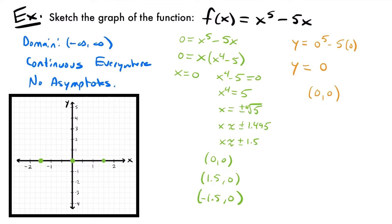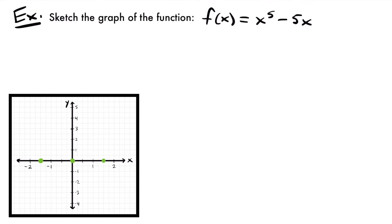We're going to start by taking the first derivative of our function and finding our relative extrema, and then we'll move into the second derivative. Taking the first derivative: f prime of x equals 5 times x to the fourth power — subtracting one from the exponent — minus 5, because the derivative of negative 5x is just the coefficient negative 5. So f prime of x equals 5x to the fourth power minus 5. Now we want to set that first derivative equal to zero and solve for x. Those are our critical values where the slope is zero and which have the potential to be relative extrema — either a relative min or max.